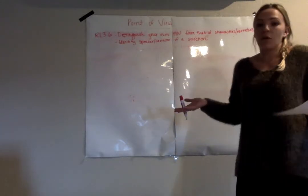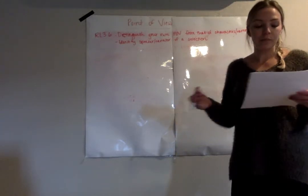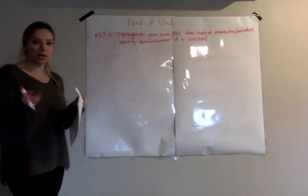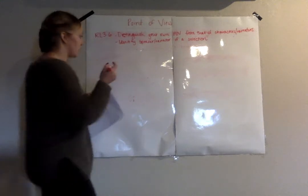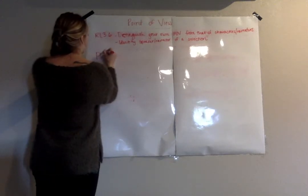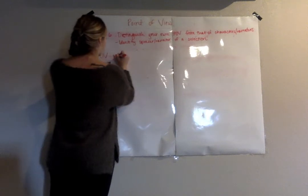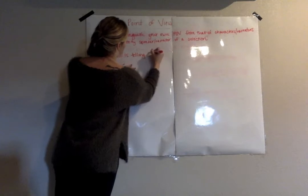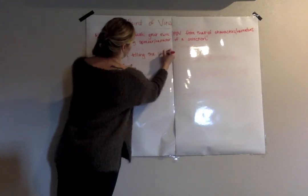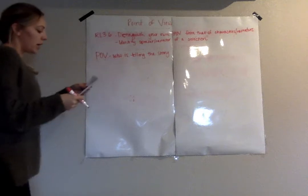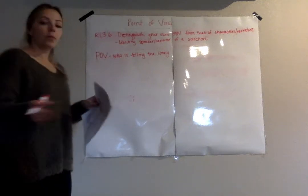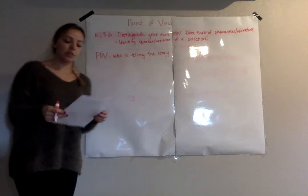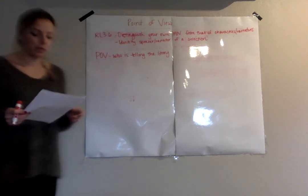So what we first need to go over is: what is point of view? Point of view is who is narrating the story, or who is telling the story. I'm going to use POV for point of view. So today we are going to discuss two important points of view — the first person point of view and the third person point of view.